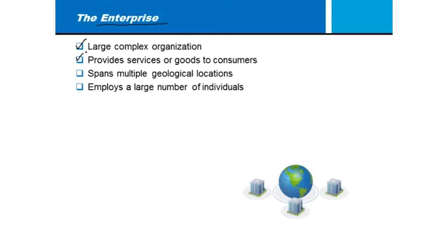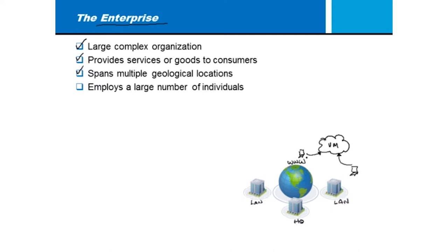It doesn't have to be large e-commerce like Amazon. It could simply be that you provide cloud services — virtual machines on the internet with customers connecting to run different applications, even from your garage. It could be a multinational company with multiple local area networks, perhaps headquarters on one continent and another LAN elsewhere, connected through the worldwide web where hackers live and might intercept or destroy your traffic.